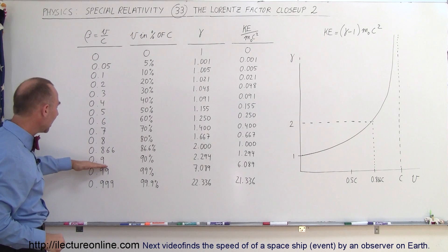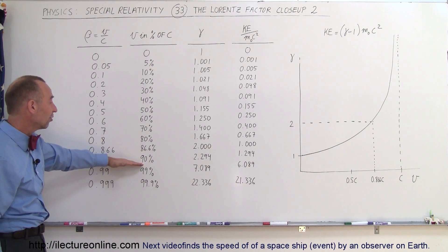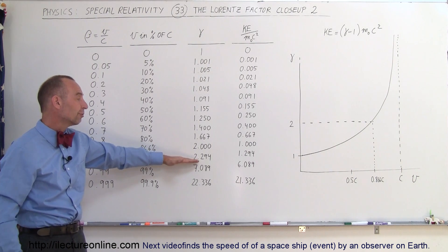Notice when we get up to 0.9, when v is 0.9c, that's 90% of the speed of light, the Lorentz Factor is now 2.294.